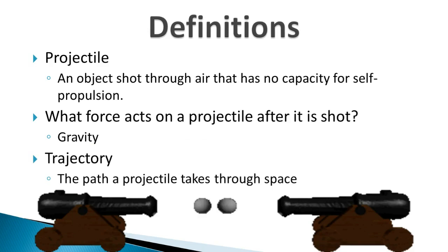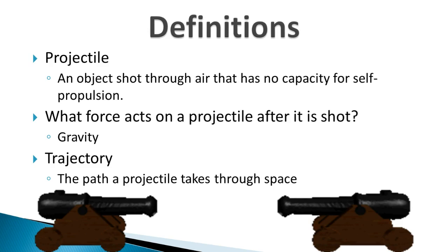The trajectory is the path a projectile takes through space. We're going to look at the shape of this path — it's curved as the object accelerates towards the ground. Because the only thing affecting it is gravity, and gravity causes all objects to accelerate towards the ground at the same rate: 9.8 meters per second squared.